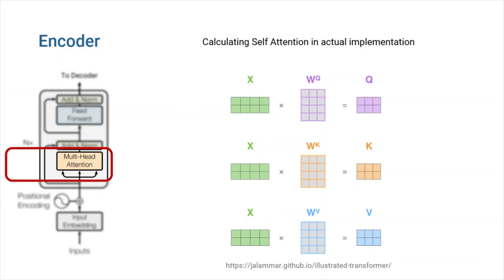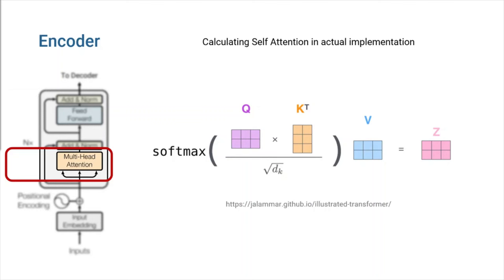In the actual implementation, embedding vectors of individual words are stacked on top of each other to create one matrix per sentence. So, instead of vectors, we end up with query, key, and value matrices. The entire process of calculating the output will be the same as before, with the exception of using matrices instead of vectors. That's it for self-attention.